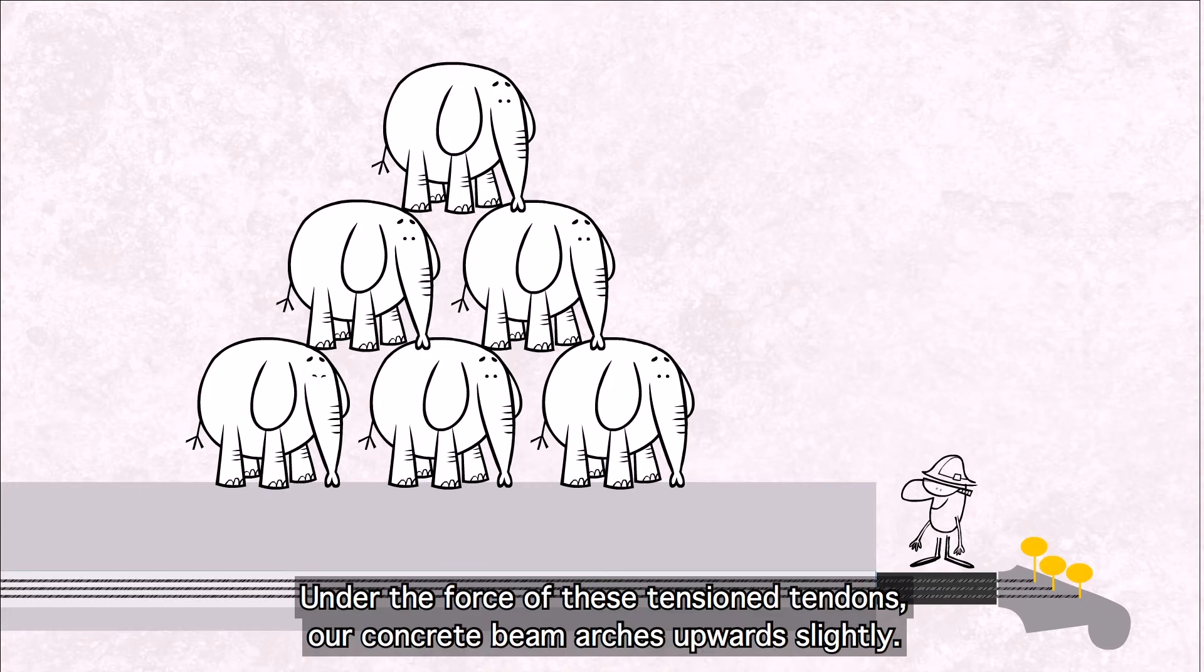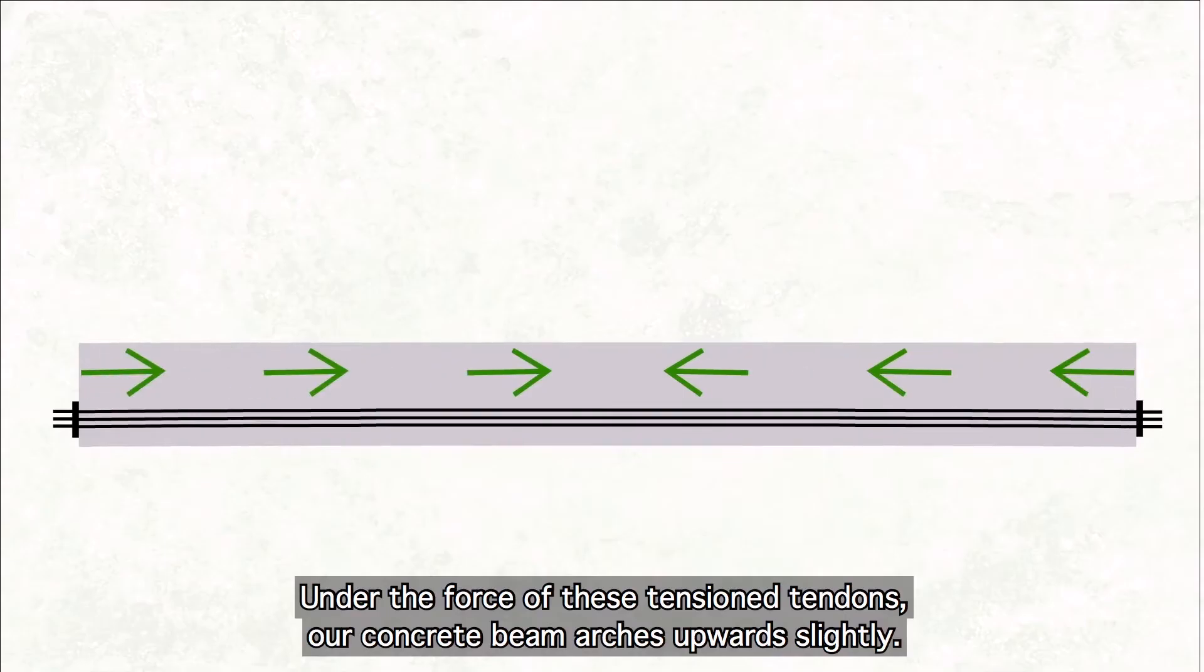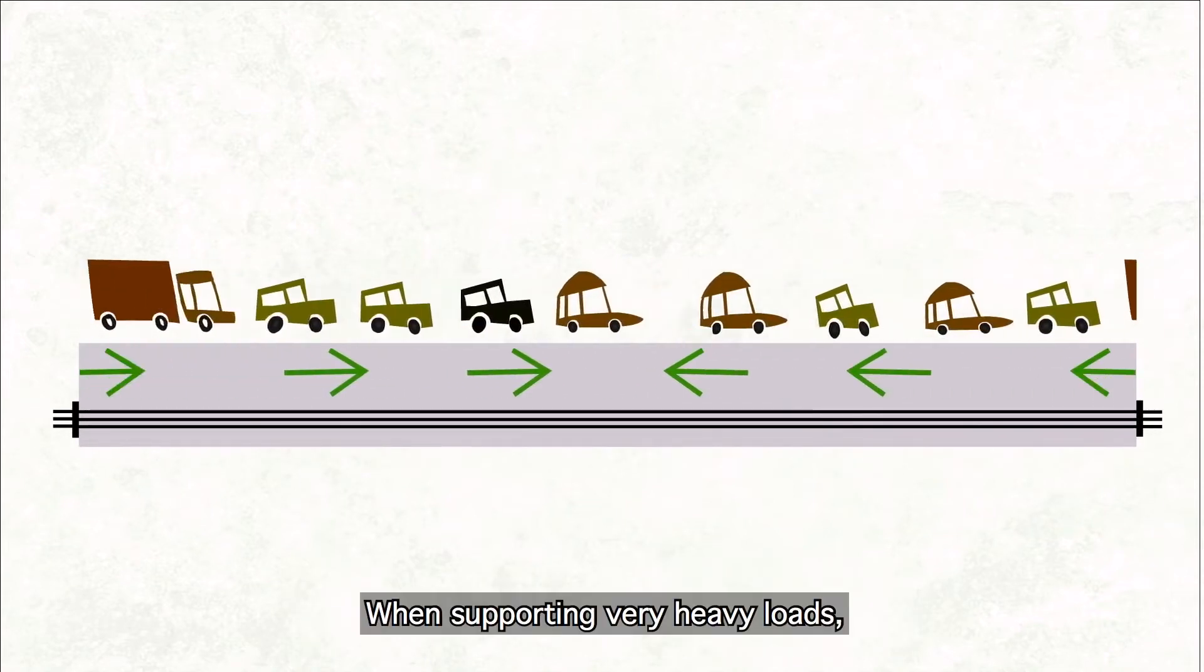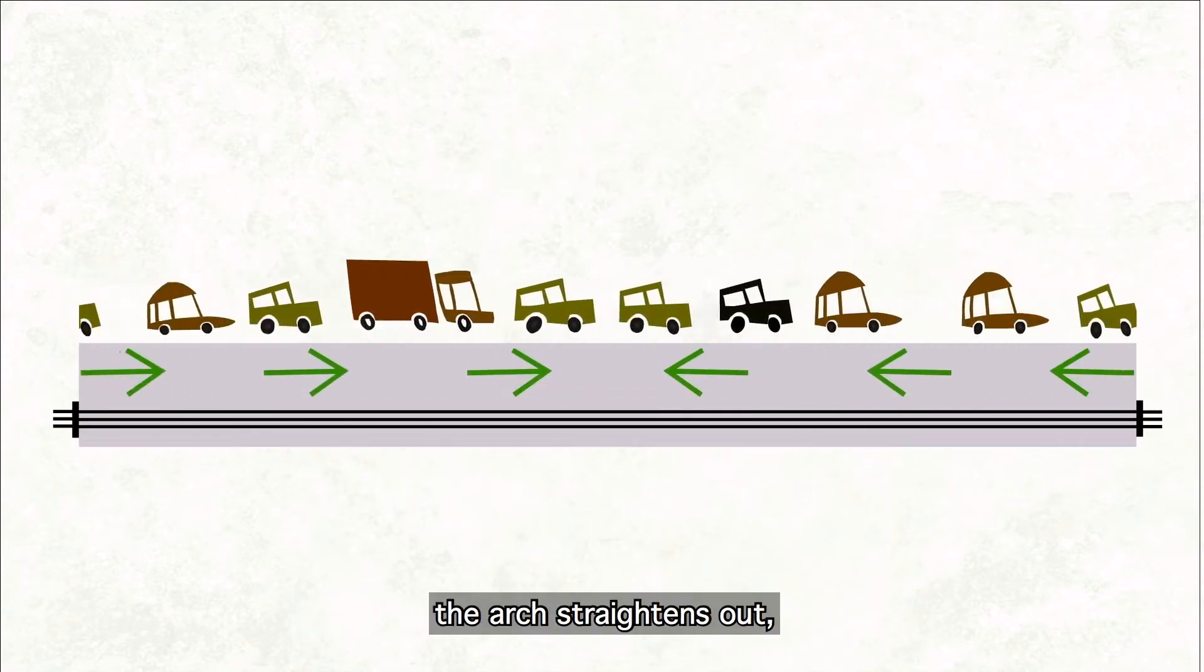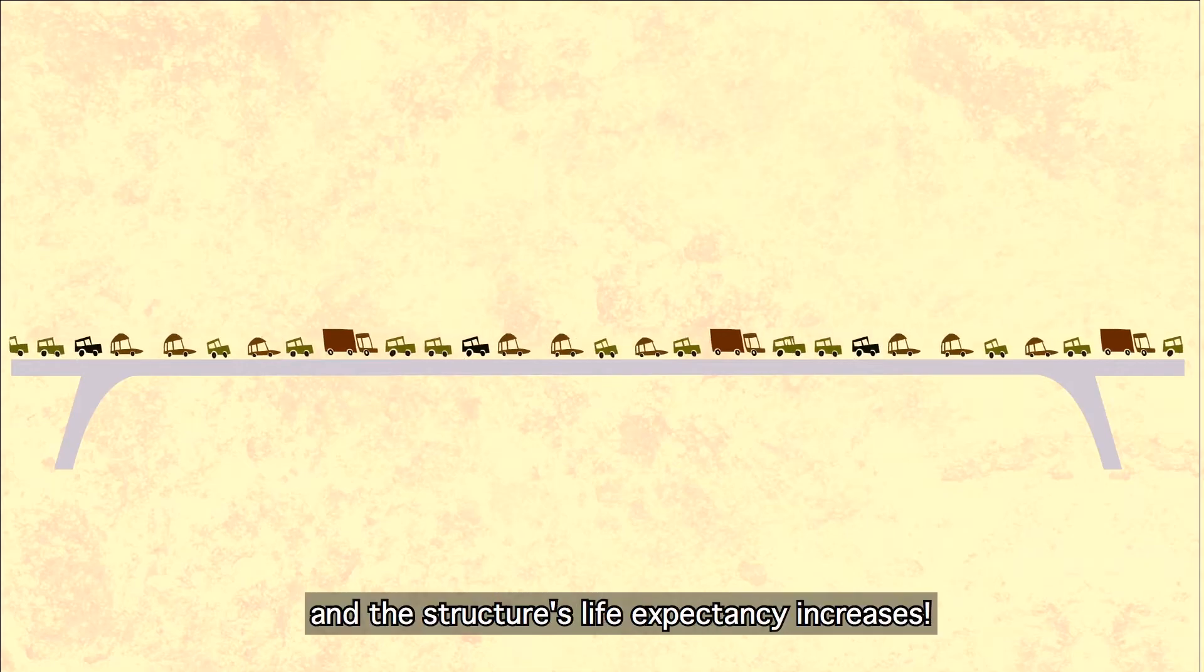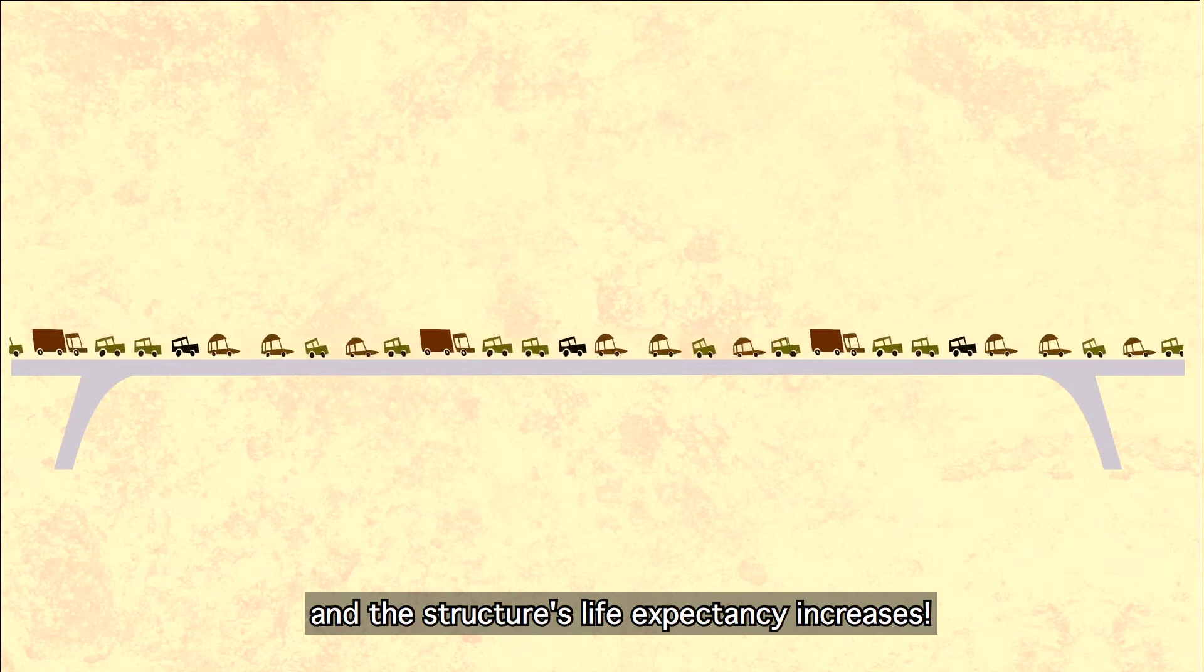Under the force of these tensioned tendons, our concrete beam arches upwards slightly. When supporting very heavy loads, the arch straightens out, but the structure does not bend downwards. No crack opens, and the structure's life expectancy increases.